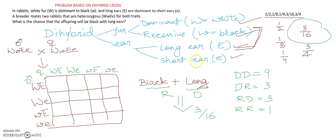If students are asked: how many offspring have white with long ears? White with long ears means both cases are dominant, so the answer is 9 by 16. Focusing back on our question — black and long ears — black is the recessive trait and long ears is dominant, so we can say the answer is 3 by 16.